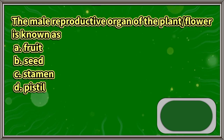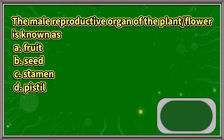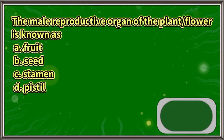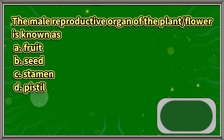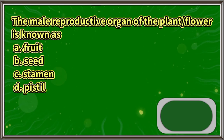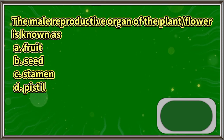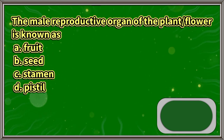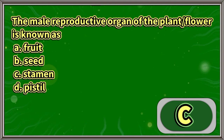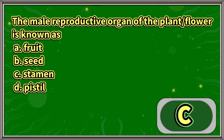The male reproductive organ of the plant or flower is known as: A. Fruit. B. Seed. C. Stamen. D. Pistil. The answer is letter C.